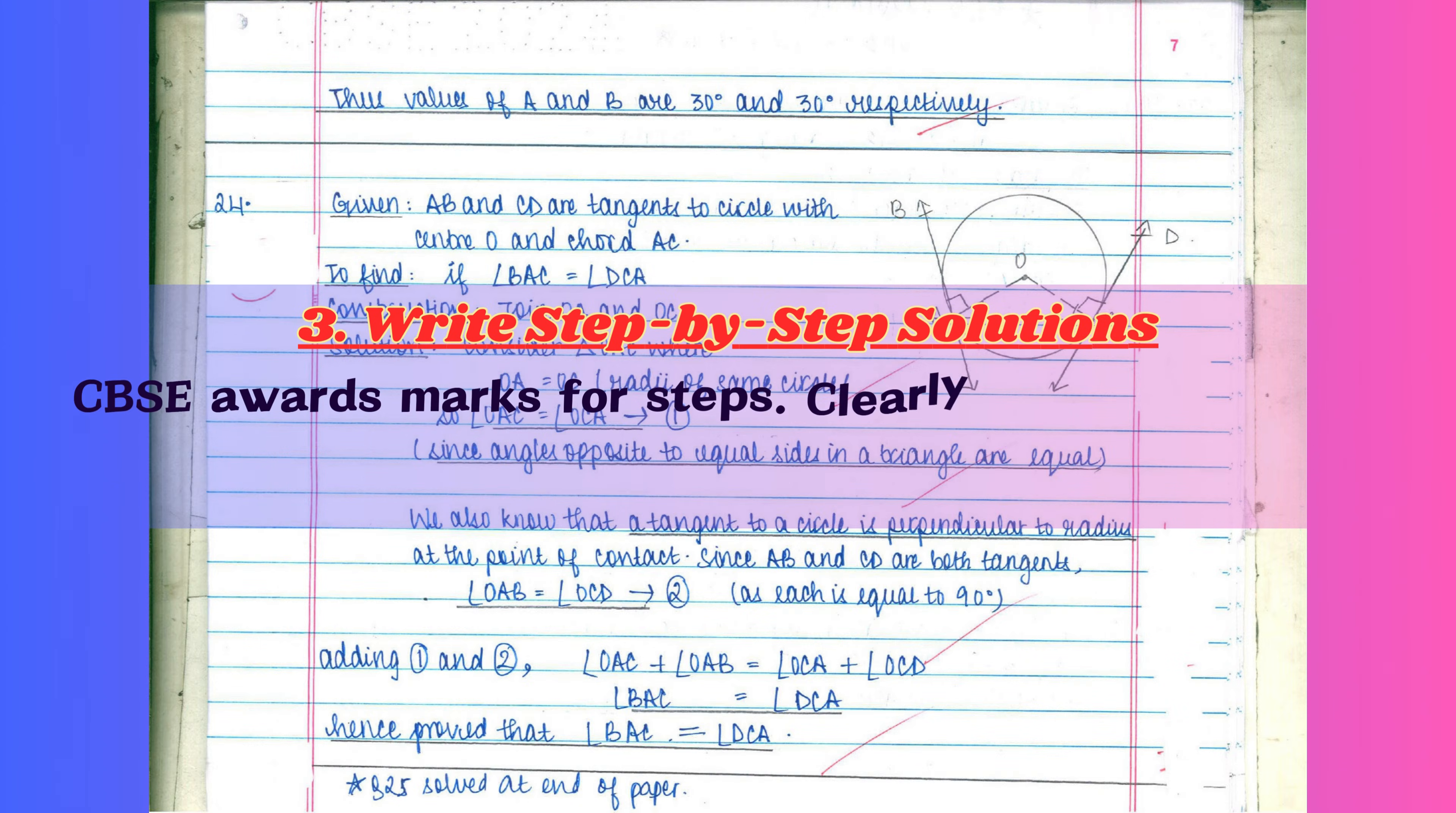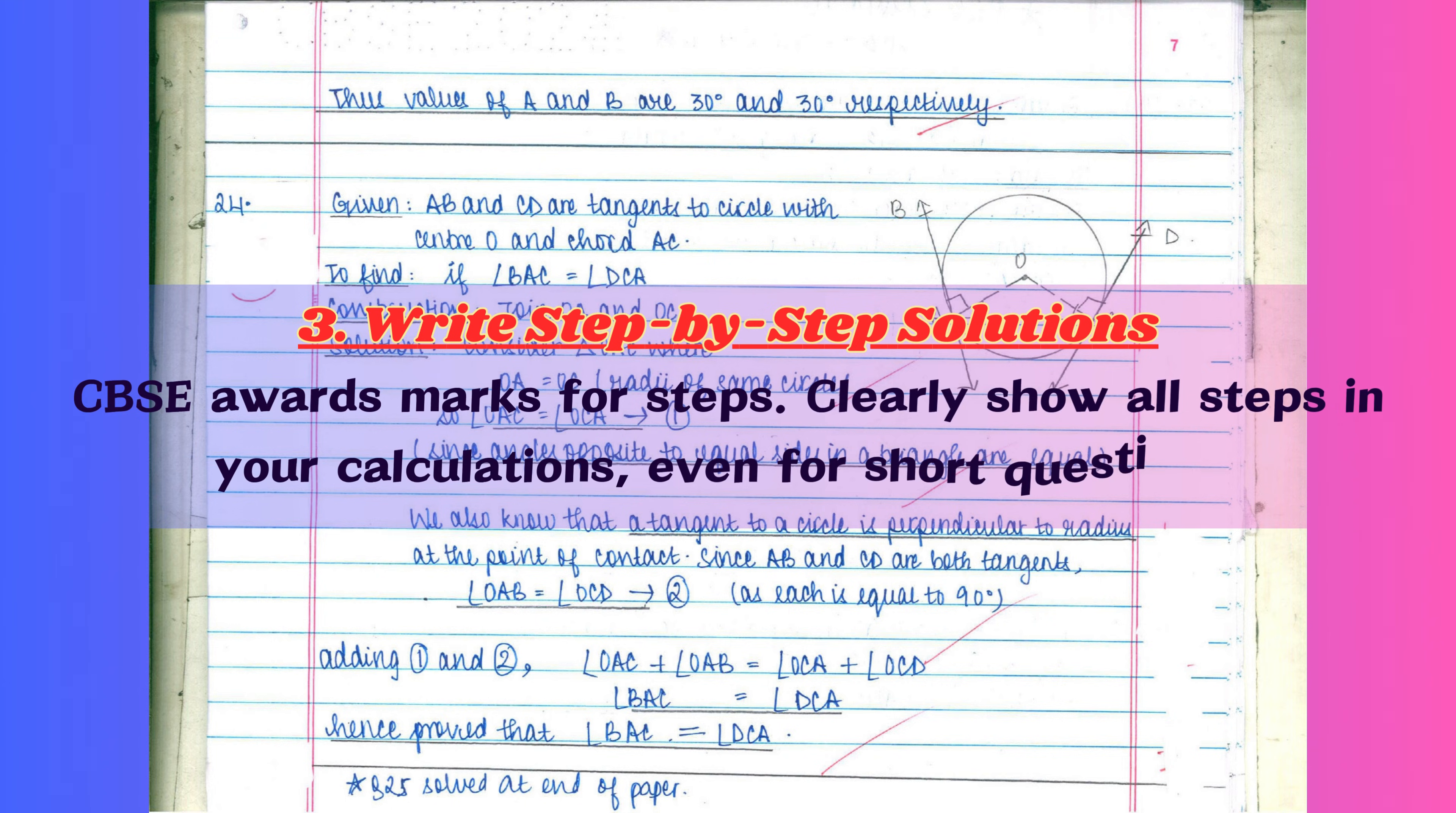Third, attempt questions in order. Remember, CBSE awards marks for steps. So even if you can't solve the entire problem, write down every step clearly. You will still earn partial marks.